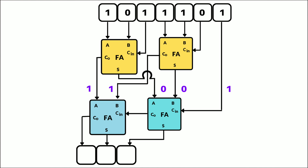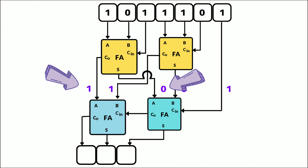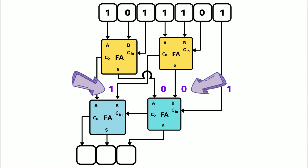Let's take the example input 1 0 1 1 1 0 1. From the first full adder, with input 1 0 1, we get sum = 0 and carry out = 1. From the second full adder, with input 1 1 0, we get sum = 0 and carry out = 1. These are the outputs of the first level.